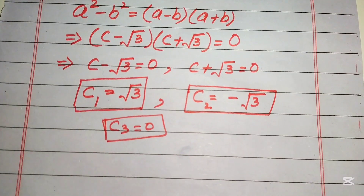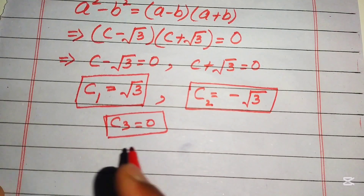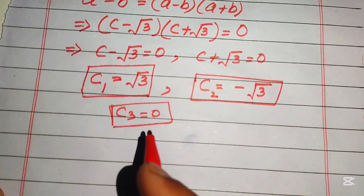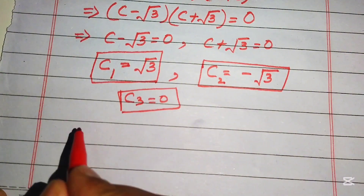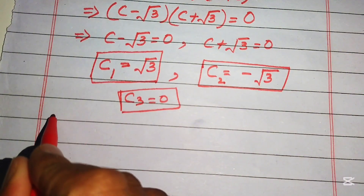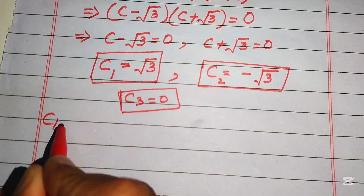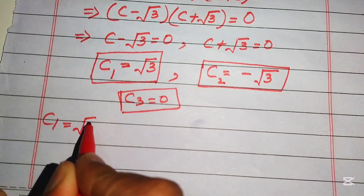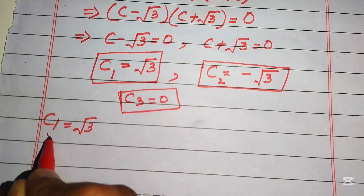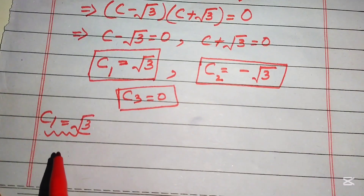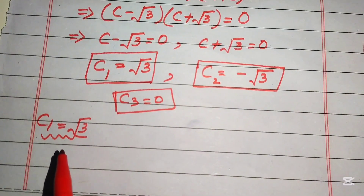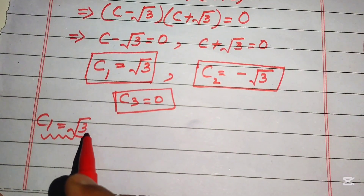In the next step we verify all three solutions. First we take c₁ equals square root of three and verify it satisfies the original equation.